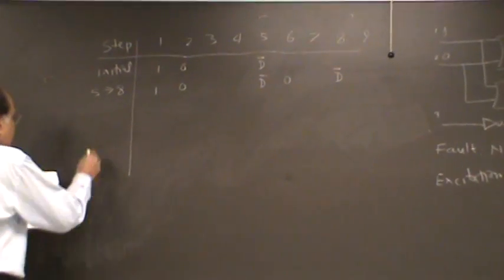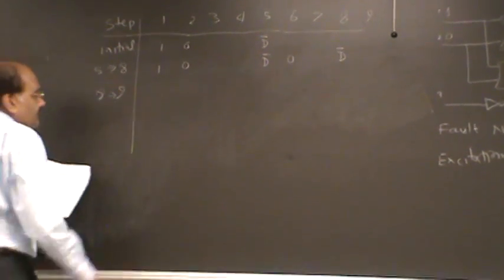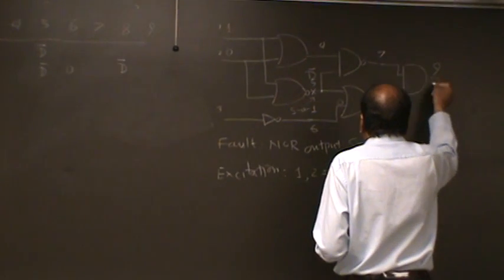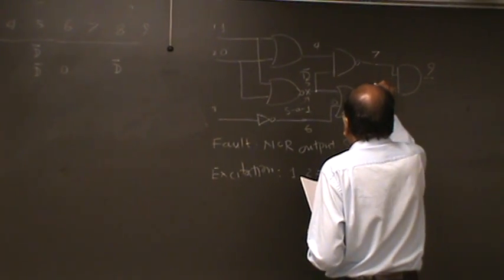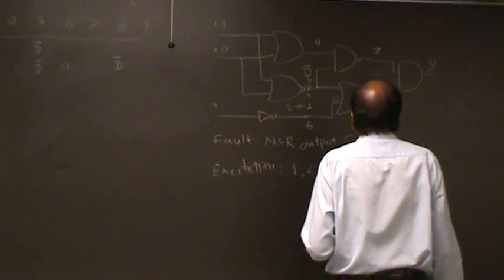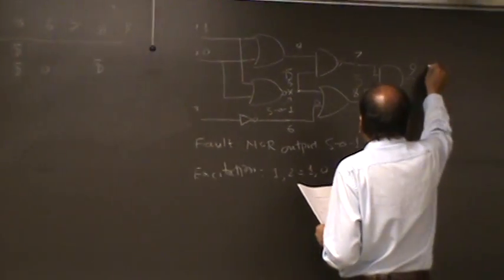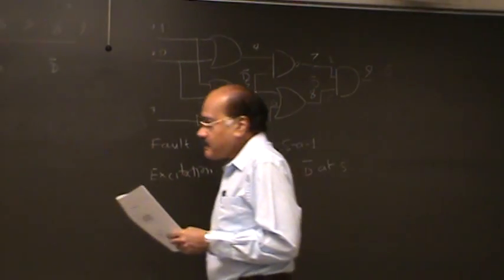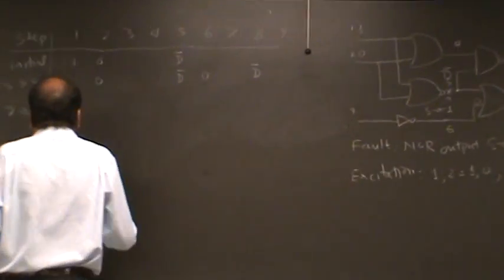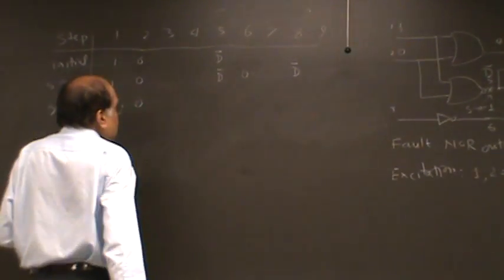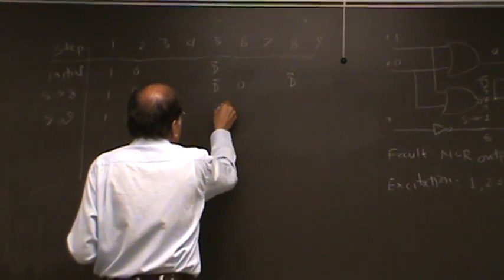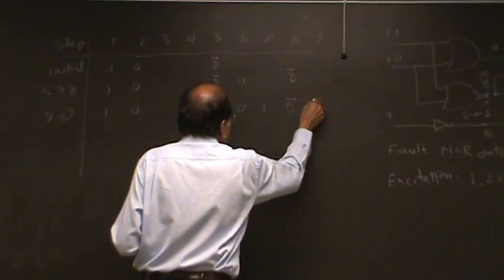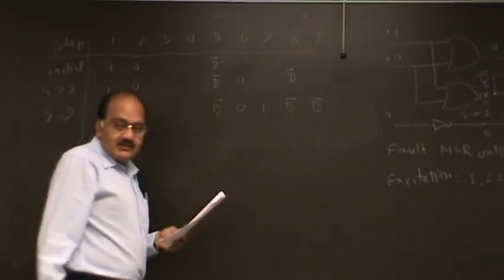So we have propagated from five to eight, and that is going to require at line six a zero. How about let's propagate it now from eight to nine. So now we got the D bar here and we want to propagate through nine. We can do that provided seven is one. So let's do that.